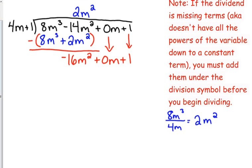I am multiplying 2m² by 4m plus 1. So 2m² times 4m is 8m³. 2m² times 1 is 2m². Would it always be like the answer in the first term? Yes. That first term should always be the exact same.